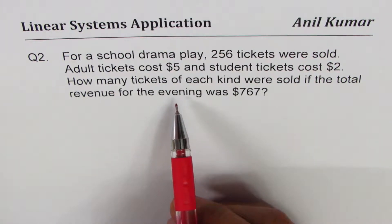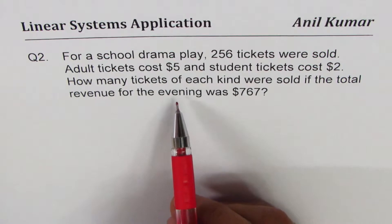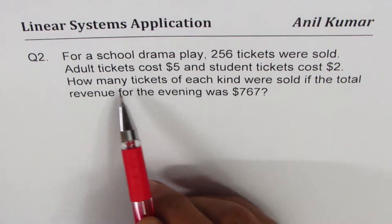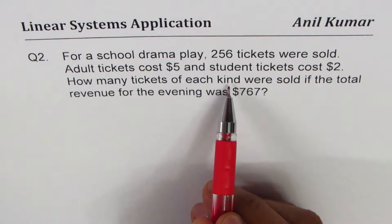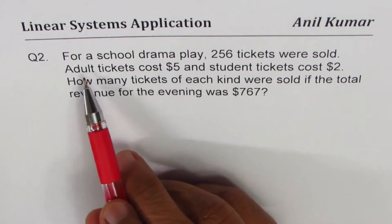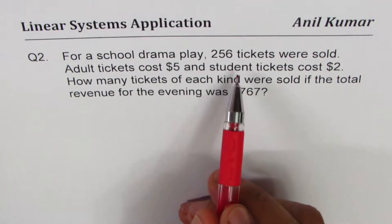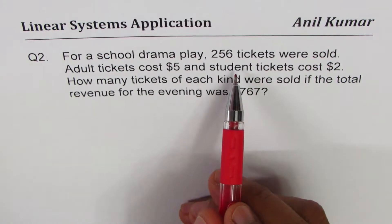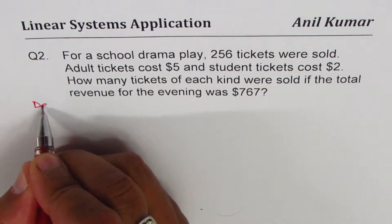So that's your final statement, which is the question for you. Let's read the final statement once again. It says, how many tickets of each kind? What kind? Adults and students. So that helps you to define the variables. Let's define variables now.